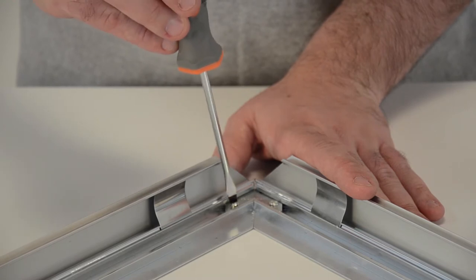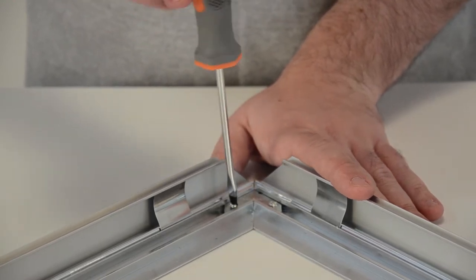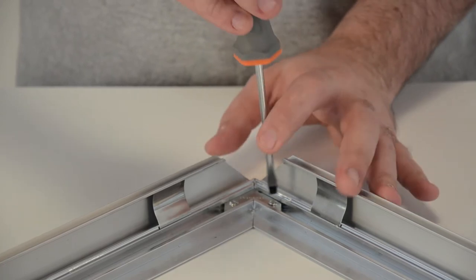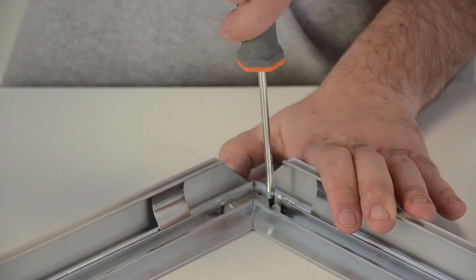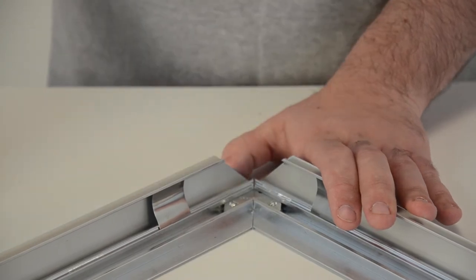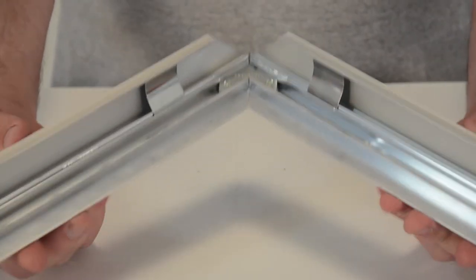Take your flathead screwdriver and fasten the screws of the corner joining plate. After completing this simple step for all the corners, the snap frame is ready to be wall mounted.